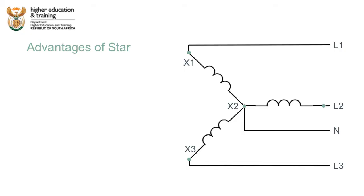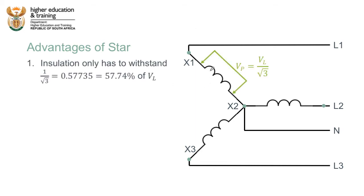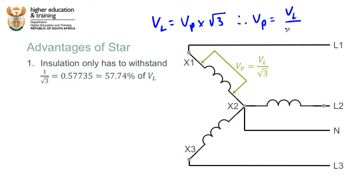Connecting a transformer in a star configuration has some advantages. The first is that the insulation around the coils only needs to withstand a portion of the full line voltage. In a star configuration, the phase voltage equals the line voltage divided by the square root of three, which is just 57.74% — a little under 58%. So in a star-configured system, the phase voltage only needs to cope with about 60% of the full line voltage, meaning the insulation doesn't need to be as robust as in a delta connection.